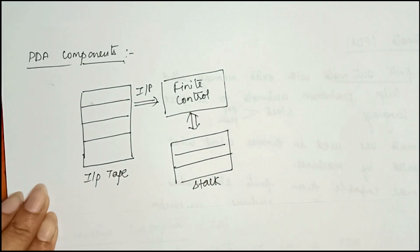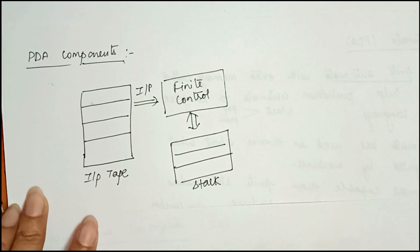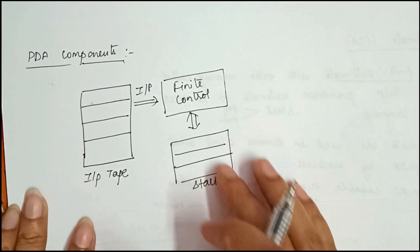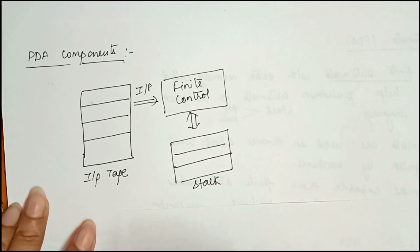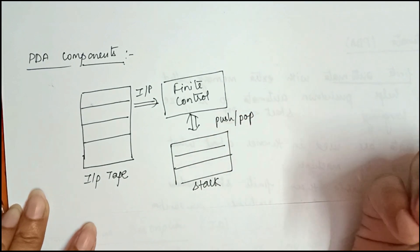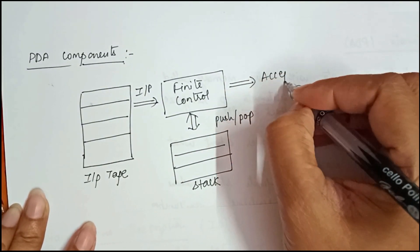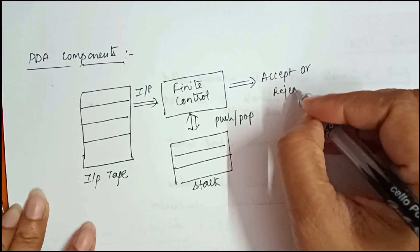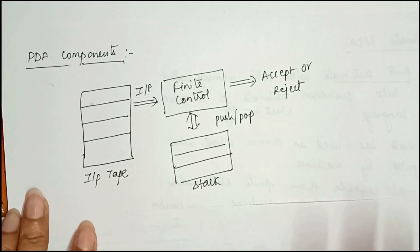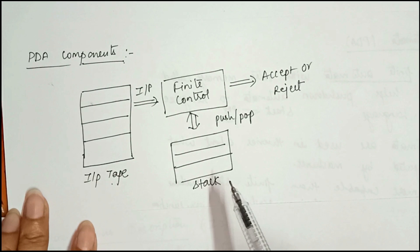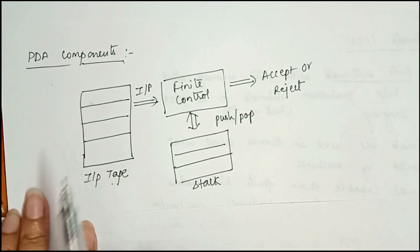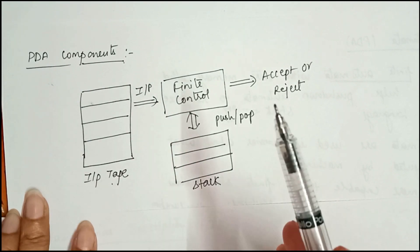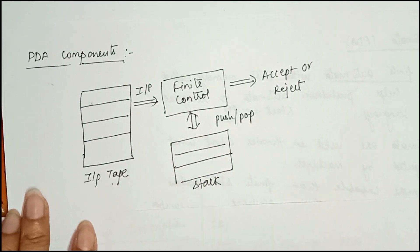The next component is the stack, from which we can push or pop symbols. The stack is a structure in which we can push or remove items from one end only, it has infinite size, and is used to store items temporarily. So from the stack we can either push or pop items, and after this we can accept or reject the string. The three components of PDA are: input tape, finite control, and stack.